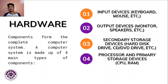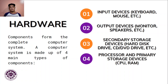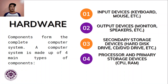Number three is secondary storage devices — examples include hard disk drives, CDs (compact discs), and DVDs (digital video discs). They are called secondary storage devices because their purpose is to store files for repository or archival purposes. Hard disk drives are also known as ROM — Read Only Memory. Number four is the processor and primary storage devices — these include the CPU (Central Processing Unit) and RAM (Random Access Memory).